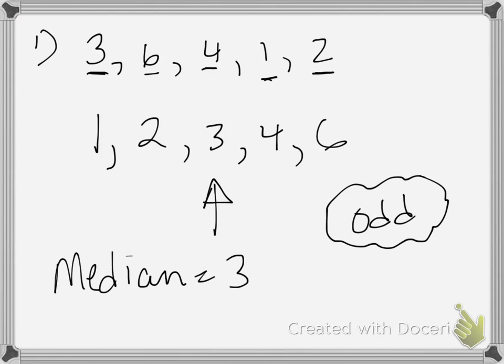But if we have a longer data set, it can be harder to instantly see the middle number. In that case, I recommend crossing off from the outsides. So the first thing I would do is cross off the 1 and the 6, because those are the outer numbers.